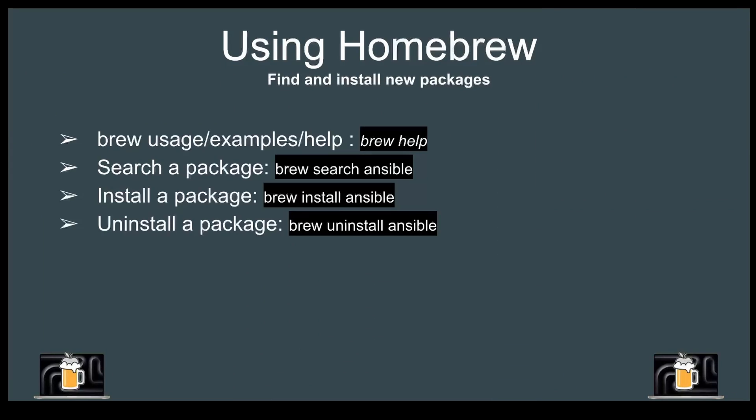Now let's look at some use case scenarios for Homebrew. If you want to see what brew can do, just run brew help. If you're looking for a certain package, type brew search followed by the package name — for example, brew search ansible. To install something, run brew install and the package name, and to uninstall, run brew uninstall followed by the package name.